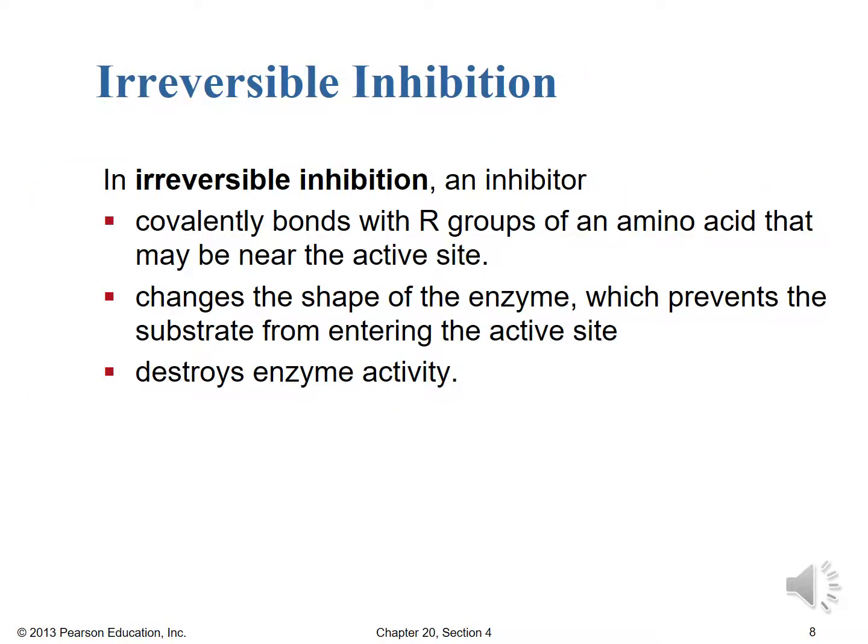In irreversible inhibition, an inhibitor covalently bonds with the R groups of an amino acid near the active site, changing the shape of the enzyme and preventing the substrate from entering the active site — whether the enzyme uses lock-and-key or induced fit. This destroys enzyme activity altogether, which is obviously detrimental for reactions that require enzymes to function.